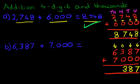And lastly, we have the thousands column. 6 plus 7. Do you know what that is? 6 plus 7 equals? That's right. It's 13. 1 here and 3 over here.